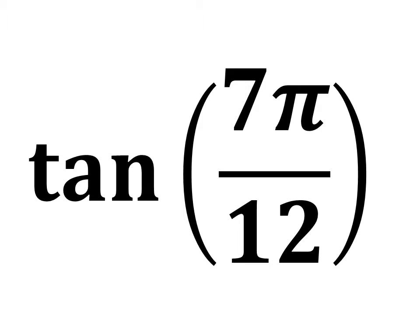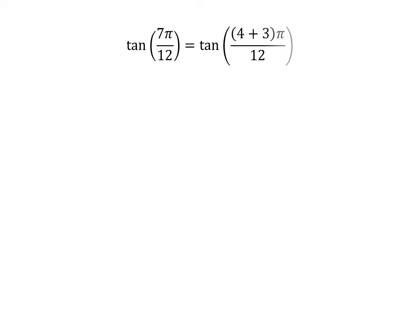In this video, we will learn to find the value of tangent of 7 times pi upon 12. We know 4 plus 3 is equal to 7, so tangent of 7 times pi upon 12 is equal to tangent of 4 plus 3 times pi upon 12.